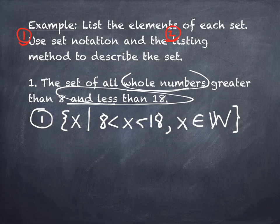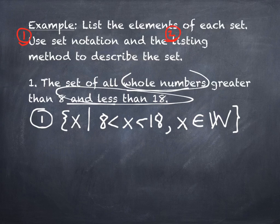Last time we left off talking about sets. We talked about the fact that we need some additional terminology, notation, and shorthand to work with our sets. We left off describing sets in different ways. This set is a verbal description — the set of all whole numbers greater than 8 and less than 18 — and we did number one, a set notation for that.